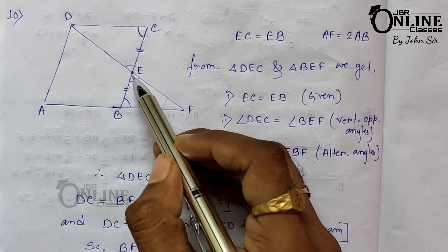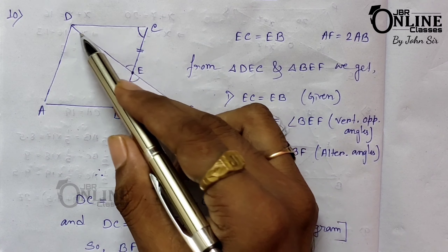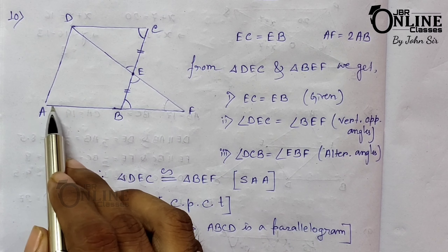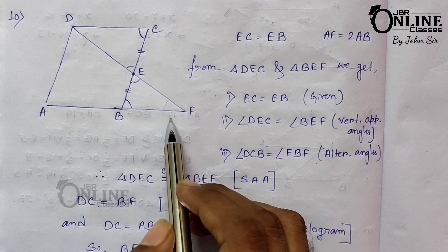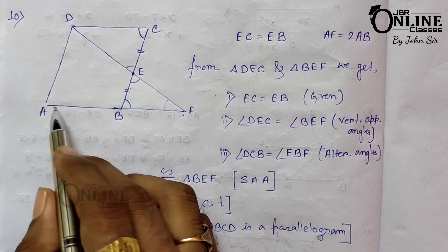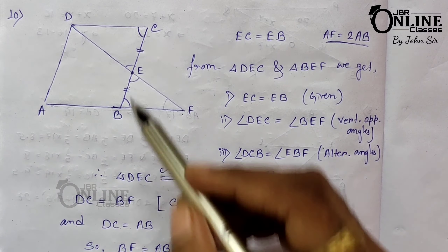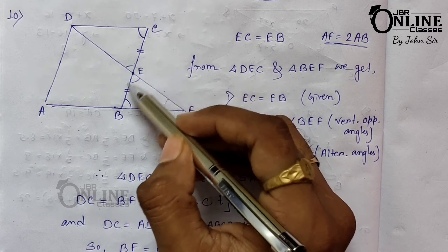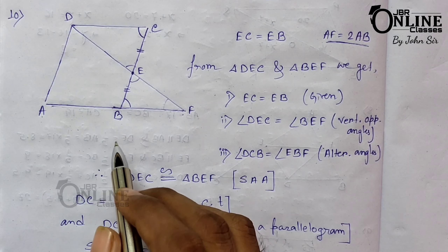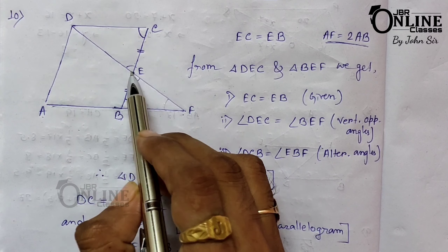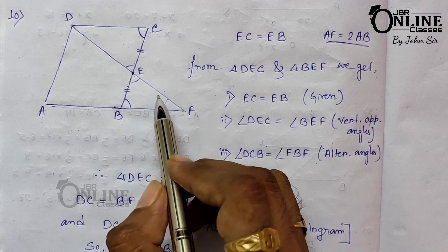Number ten: in the figure, ABCD is a parallelogram and E is the midpoint of side BC, so BE equals EC. When DE and AB are produced, they meet at point F. We need to prove that AF equals 2AB. Since ABCD is a parallelogram, opposite sides are parallel, so in triangles DEC and BEF these two triangles need to be shown congruent.